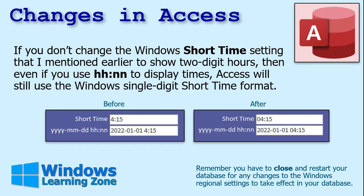I actually did a video about this years ago, it's on my YouTube channel and website. Basically, even if you specify HHNN as the format, Access will still convert that over to short time and use one digit for the hour. It doesn't care.